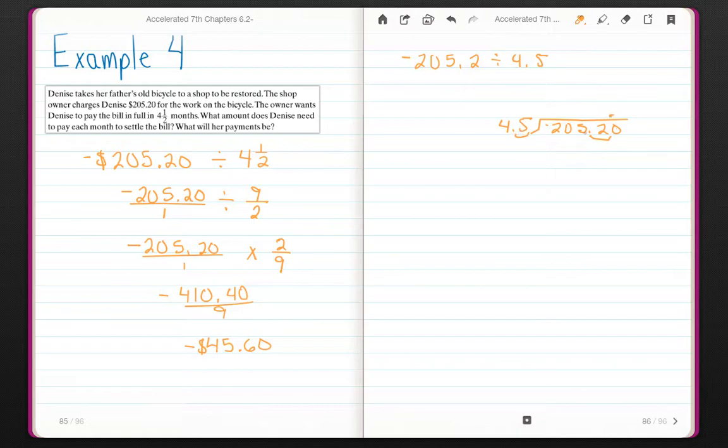Now 45 goes into 205 four times. 4 times 5 is 20. 4 times 4 is 16, 17, 18. 5. 20 minus 18 is 2. Bring down the 2. 5 times 5 is 25. 4 times 5 is 20 plus 2 is 22.